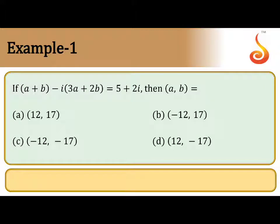If a plus b minus i into 3a plus 2b equals 5 plus 2i, then find the values of a and b.